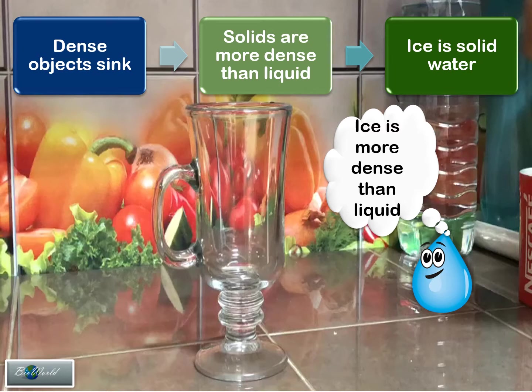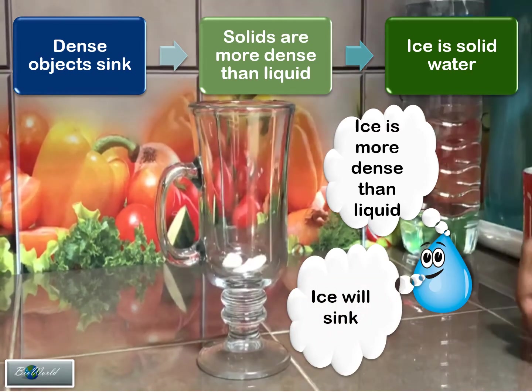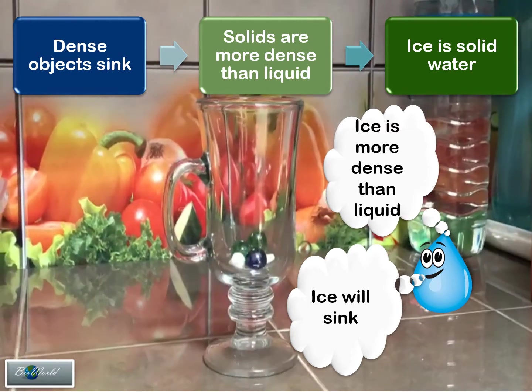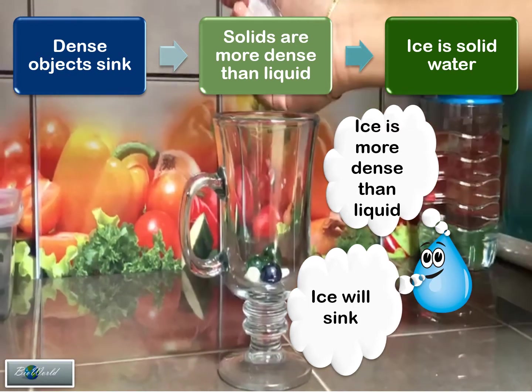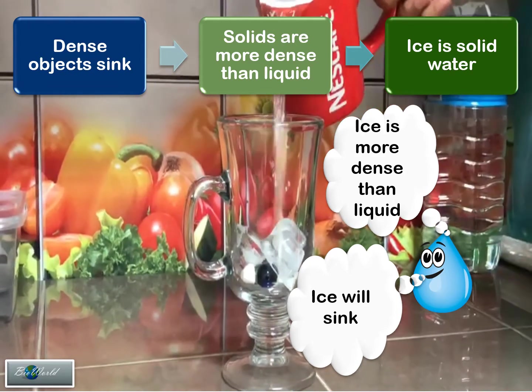So let's see if this concept is going to be true. Here I put in a solid stone, solid marble, and solid water - that is ice juice. I'm going to pour water in.